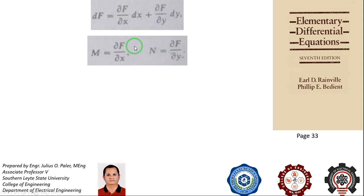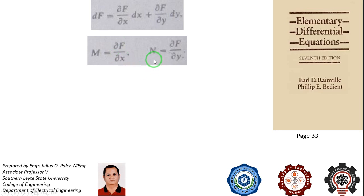Why do we use partial derivatives here? It is because f contains two variables, so we cannot get the ordinary derivative but rather the partial derivative. We perform partial differentiation when dealing with a function having two or more variables.